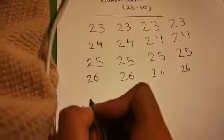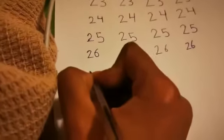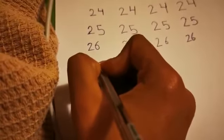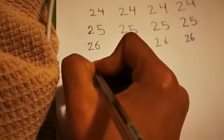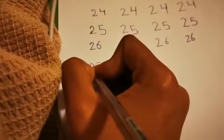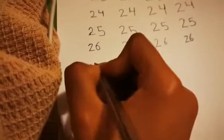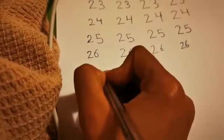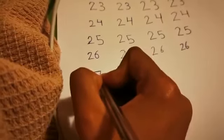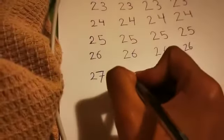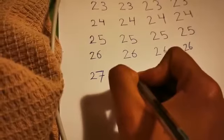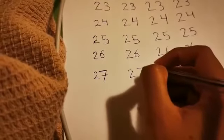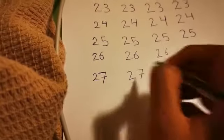Let's do number 27. After 26 is 27. Curve, diagonal, straight line, and circle — wait, that was 26. For 27: curve, diagonal, straight line. And number 7 — how do we write it? Sleepy line, and a diagonal line, another sleepy line. Let's do it again: curve, diagonal, straight line. Number 7: sleepy line, diagonal line, another sleepy line.